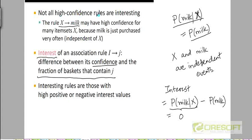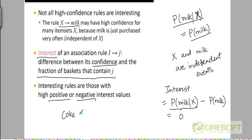High confidence rules may still not be interesting. Interesting rules are those where the value of the interest is significantly positive or significantly negative. For example, if people who purchase milk and diapers actually tend to also buy beer in a store, then the interest for that association rule will be significantly positive — significantly larger than zero. The converse can also be true: it's possible that the purchase of some item could drastically reduce the probability of purchasing some other item.